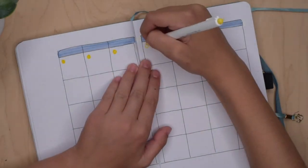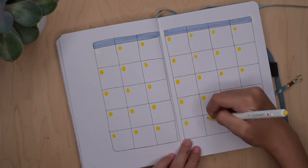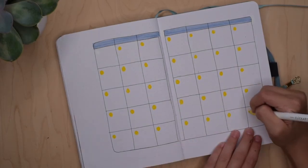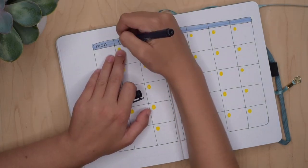So for the numbers I just did these little yellow circles to write them in, and then for the days of the week I'm just writing in the days with that typewriter kind of font.